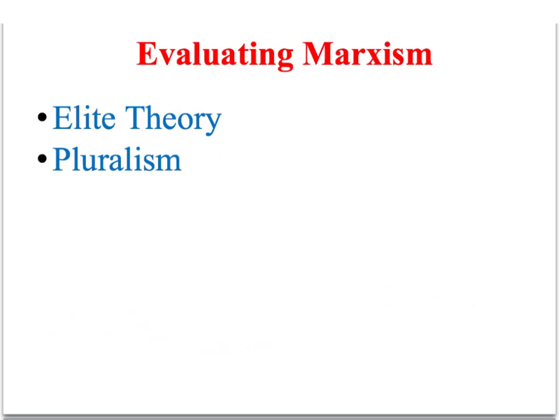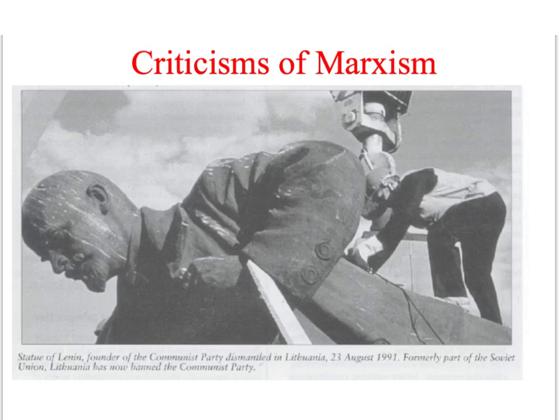For example, classical elite theorists would not share the optimism that Marxists have for revolutionary social change. Robert Michels coined the term 'the iron law of oligarchy' to convey the idea that rule by a small elite was inevitable in all types of societies, even those that had undergone a revolution.